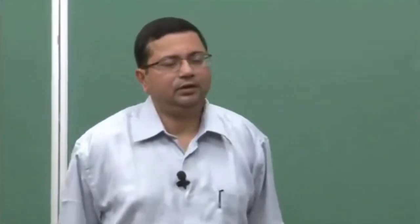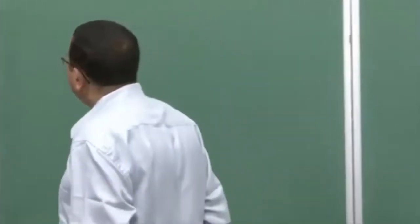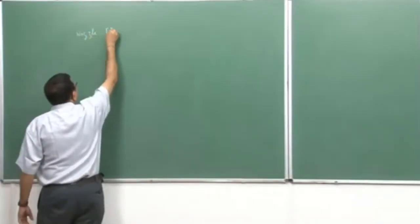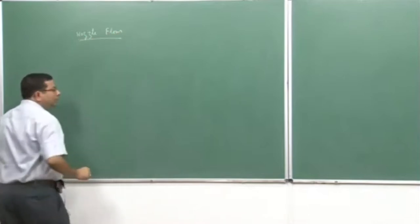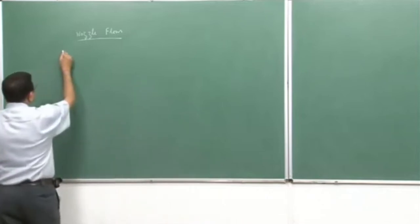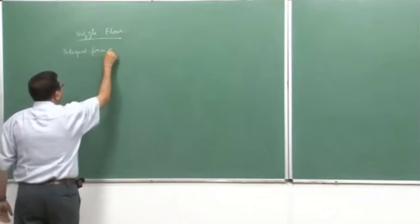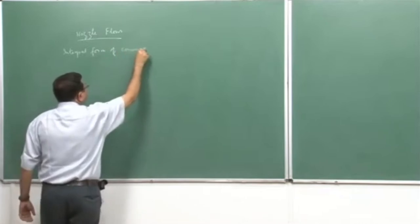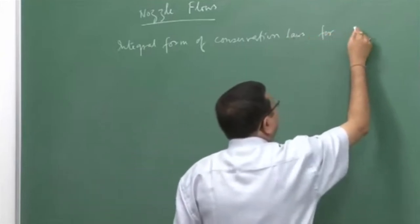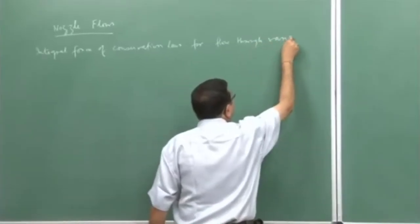Welcome back to this lecture on rocket and space propulsion. For the last few lectures, we have been discussing nozzle flows. Under this topic, what we have done so far is derive the expression in the integral form of conservation laws for flow through a variable area duct.